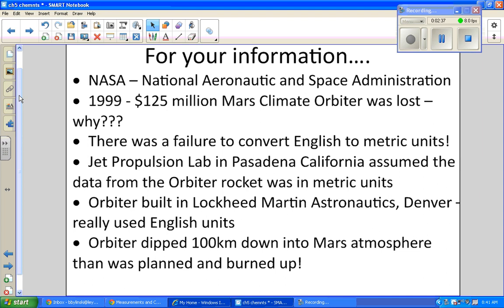This is meant to show you the importance of units and knowing how to convert your units. There was a failure to convert from English to metric. There were two labs working on this project. You had the Jet Propulsion Lab in Pasadena, California, and they assumed the data from the orbiter rocket was in metric units. The orbiter was built in Lockheed Martin Astronomics in Denver, Colorado, and they really used English units.